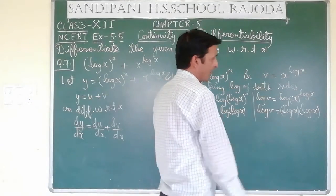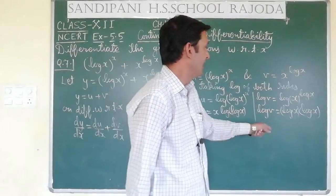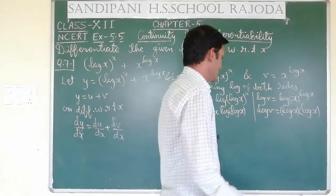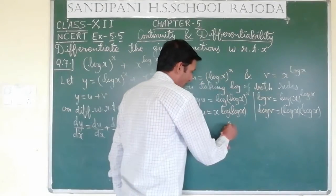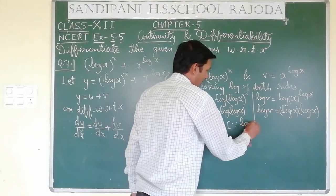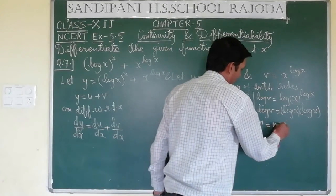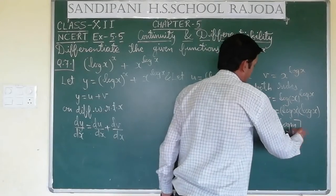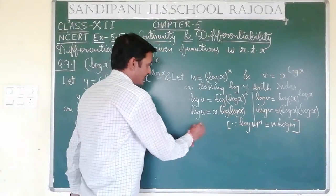Here you can apply the product rule to solve it very easily. Otherwise you may write it as (log x) whole square. The applied formula in both cases is: log m raised to the power n equals n log m.